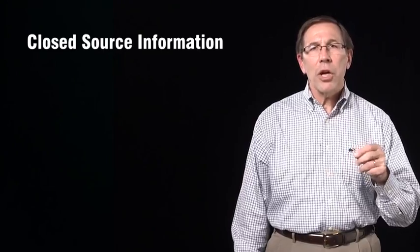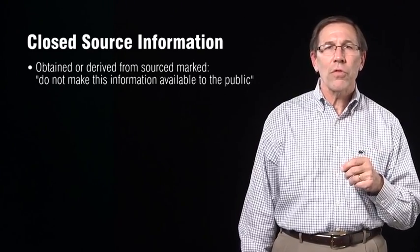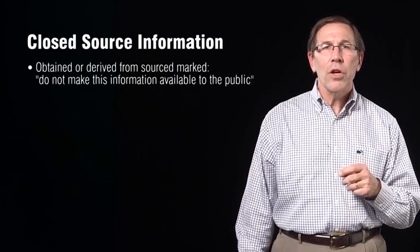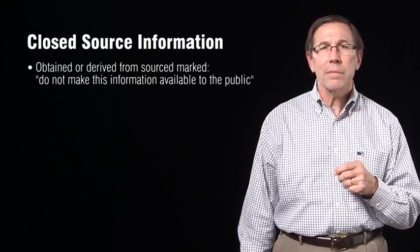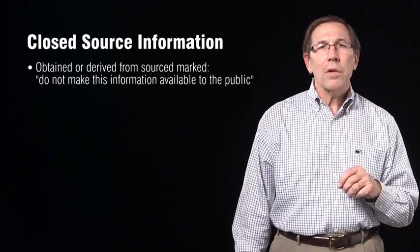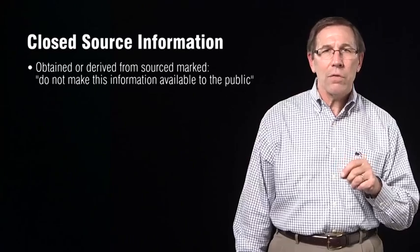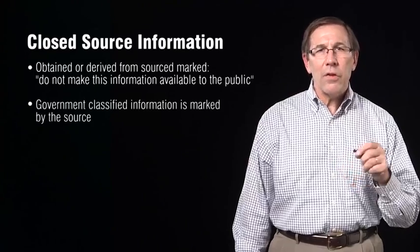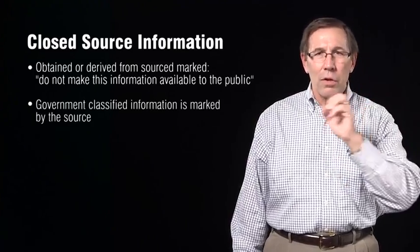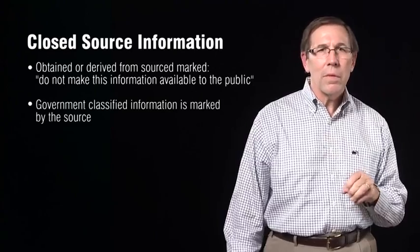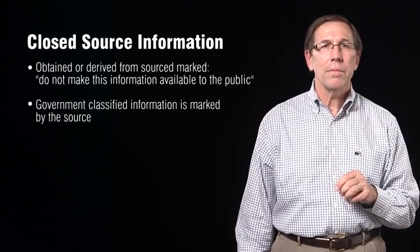In general, closed source data are obtained and distributed from sources that are marked 'do not make this information available to the public.' Government-classified information is guarded with such markings — it is marked with a security designation such as 'classified' or 'secret,' typically put on by the source of the information.